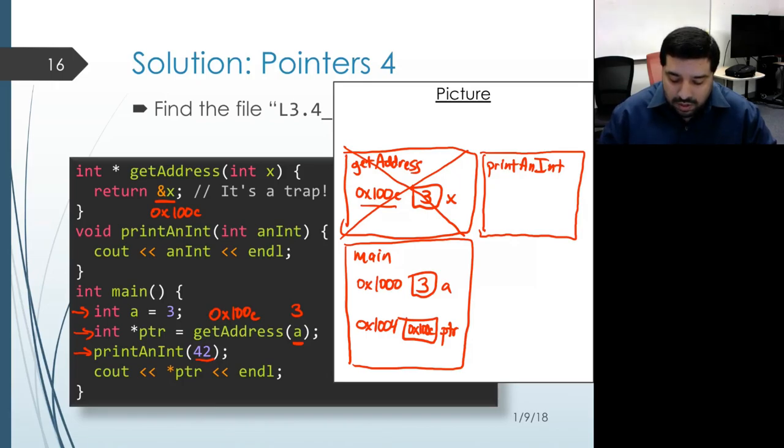So that means that our parameter anInt, its memory location, most likely will also happen to be the same memory location as where the parameter X was in the call to getAddress.